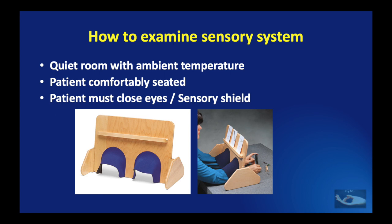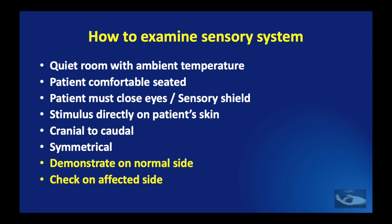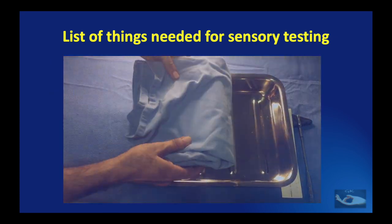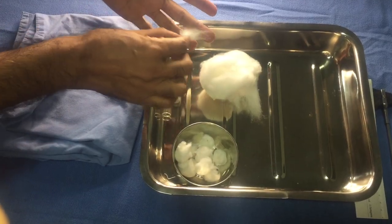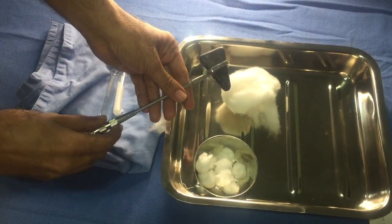The stimulus must be applied directly on the patient's skin, tested from cranial to caudal in a symmetrical manner on both sides. The test should first be demonstrated on the normal side, then checked on the affected side. A basic equipment tray should contain gloves, cotton wool for touch sensation, two test tubes for cold and warm water for temperature testing, and a knee hammer for deep tendon reflexes.